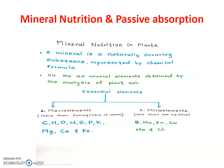Mineral Nutrition in Plants. A mineral is a naturally occurring substance represented by a chemical formula. Examples of minerals are Hydrogen (H), Carbon (C), Nitrogen (N), Phosphorus (P), Potassium (K), Calcium, Magnesium, Molybdenum. These are all the 40 mineral elements obtained by the analysis of plant ash.